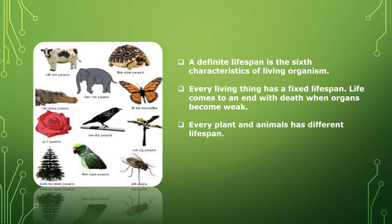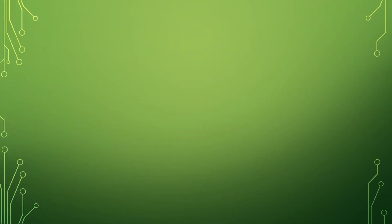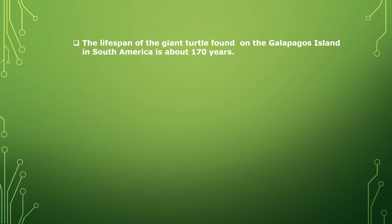Every plant and animal has a different lifespan. For example, a dog lives 12 to 18 years, an ostrich lives 50 years. The lifespan of the giant turtle found on the Galapagos Island in South America is about 170 years. The lifespan of a mayfly ranges from 1 hour to 24 hours.